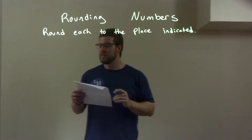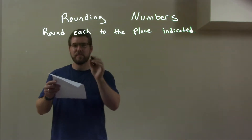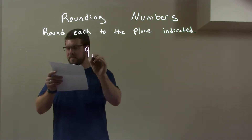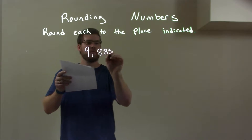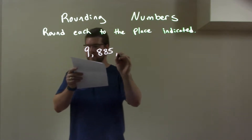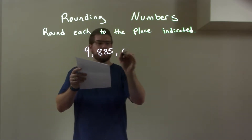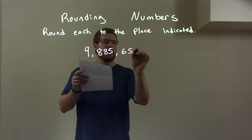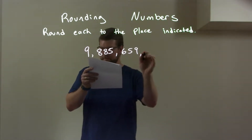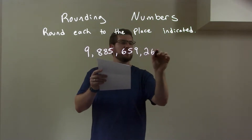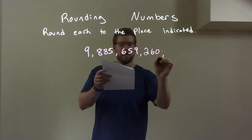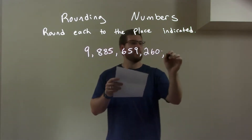So, if I was given this number: 9, 8, 8, 5, 6, 5, 9, 2, 6, 0. And we're rounding in the billions.